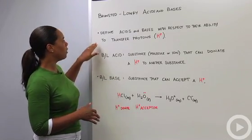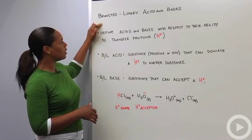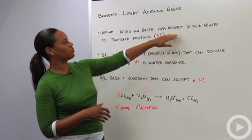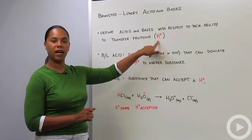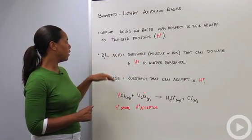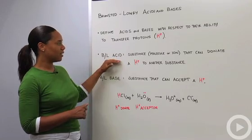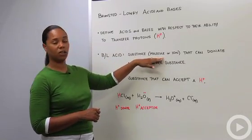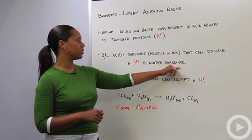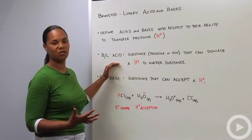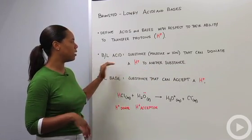The Bronsted-Lowry model defines acids and bases with respect to their ability to transfer protons, shown here as H+. A Bronsted-Lowry acid is a substance, either a molecule or an ion, that can donate a proton to another substance. An acid with respect to Bronsted-Lowry is a proton donor.